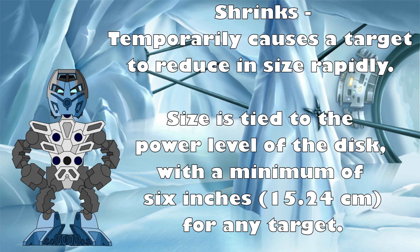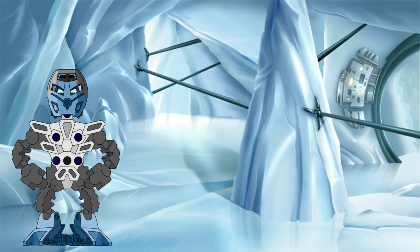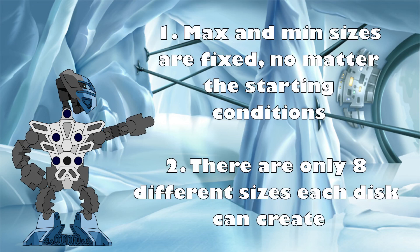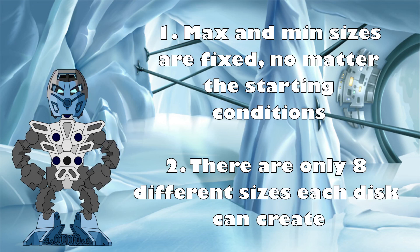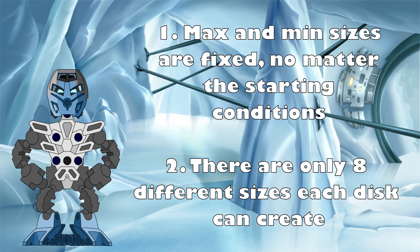The shrink disc, meanwhile, temporarily causes a target to reduce in size rapidly. As before, the final size is tied to the power level of the disc, but this time with a minimum of six inches, or around 15.24 centimeters, for any target. Two things stand out as important here. One, no matter the starting size of the target, an enlarged disc can't make it larger than 18.29 meters tall, and a shrink disc can't make it smaller than 15.24 centimeters — meaning an object already at or above the height maximum, or at or under the height minimum, wouldn't be affected by the discs. Two, the amount that the target grows or shrinks is directly related to the power level of the disc, meaning that if you used a specific power level of disc on the same target multiple times, it would always produce the same height outcome in each instance.